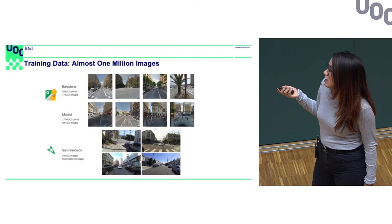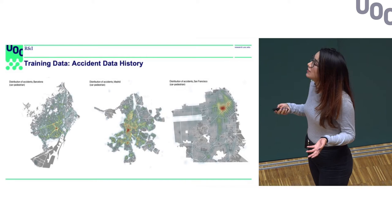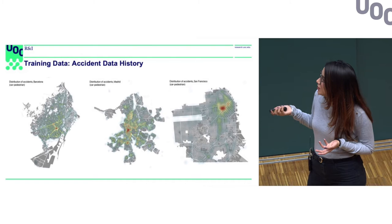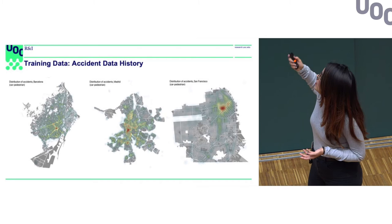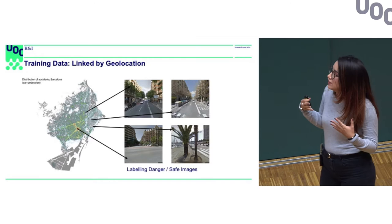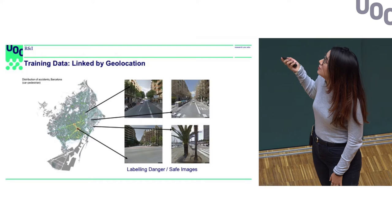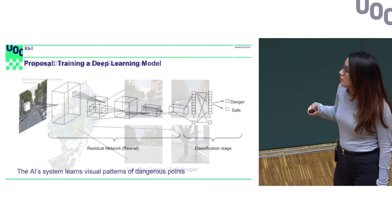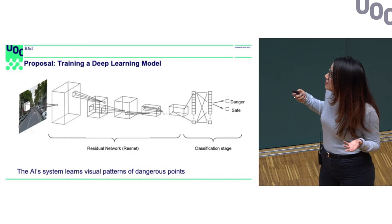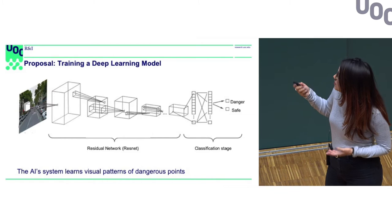We also needed to know where accident data happened previously. We have the coordinates of pedestrian accidents that occurred in the last 10 years for each city. We can link these two data sources to build a training dataset of urban scenes that have been dangerous in the past, so that the deep learning model learns the visual patterns of those urban scenes.